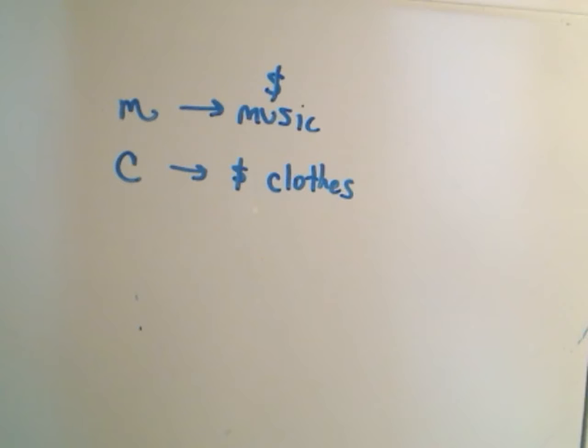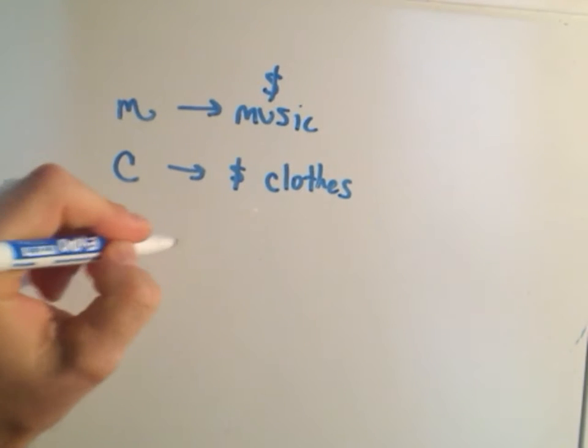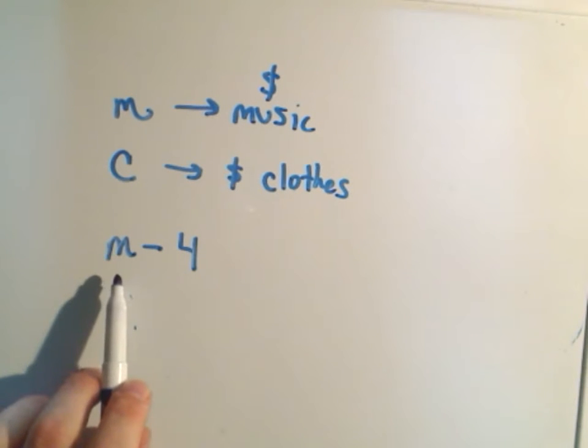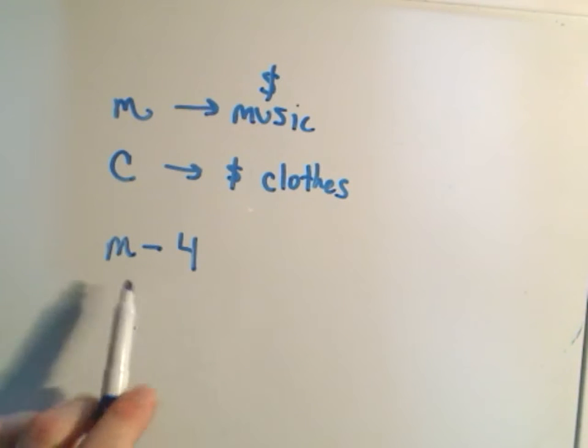The inequality says he must spend at least $4 less on music. So the amount of money he spends on music is M. If we subtract 4, that'll be $4 less compared to what he normally spends on music.